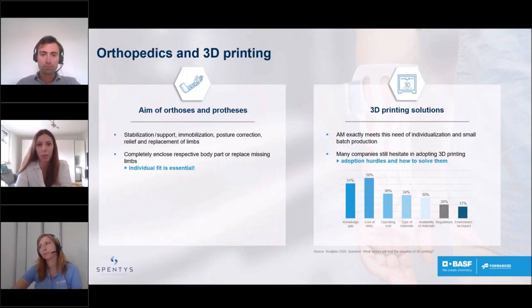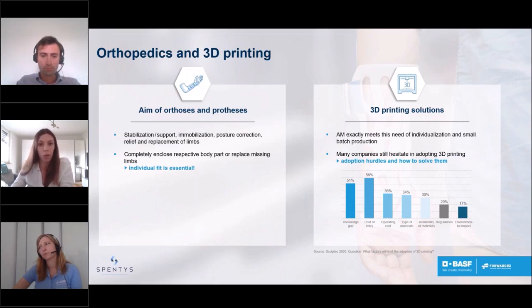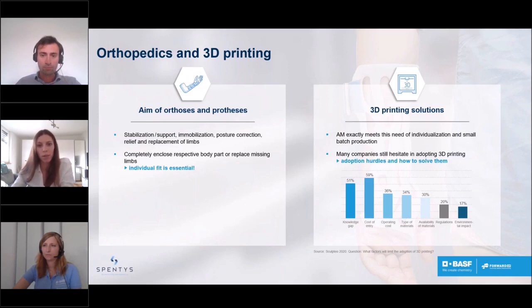Let's start with a short explanation of orthoses and prostheses. These are medical aids that can be used after an accident or injury, as support within a longer therapy, or for patients with handicaps. While orthoses support a specific body part for stabilization, immobilization, or posture correction, prostheses substitute a missing body part. Both types of devices are in close contact with the body, and because each person is unique, a perfect fit is crucial for comfortable wear and fully functional performance.